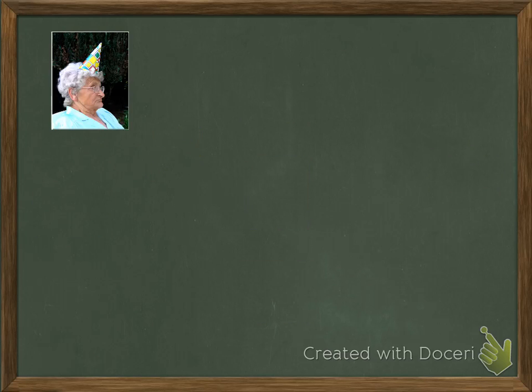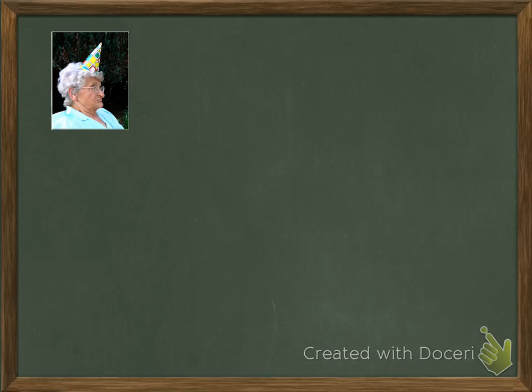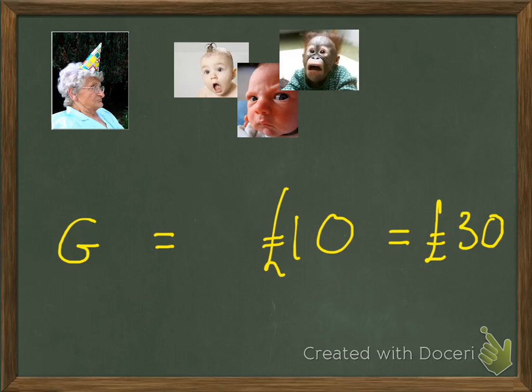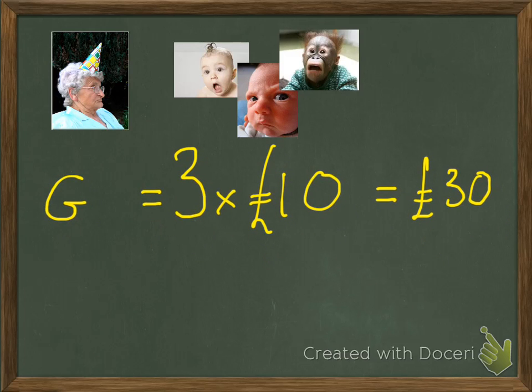Now let's have a look at that mathematically. Well, the first thing that we could say is that Granny, I'm just going to call Granny G. She equals £30, and we know that she had £10. But we also know that she had three grandchildren, and we've probably worked out that if Granny pays £10 for each child, then that's going to equate to 3 times 10, which is 30. So that is proportion.